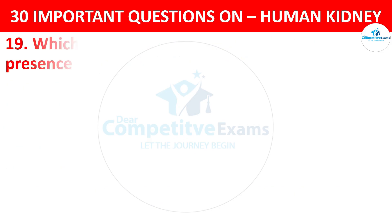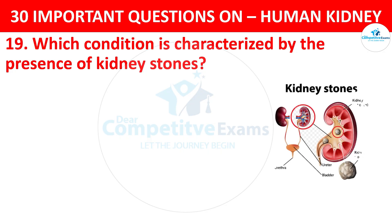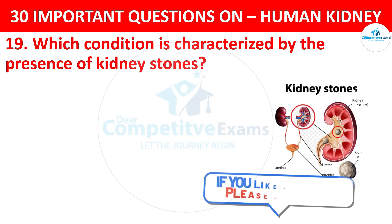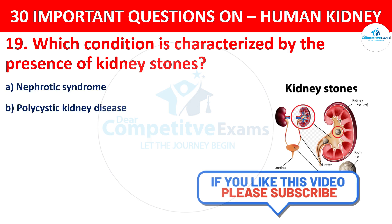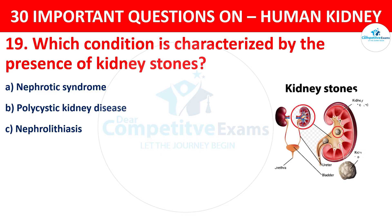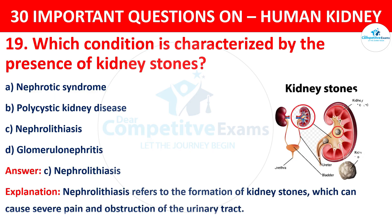Question 19. Which condition is characterized by the presence of kidney stones? The options are: Nephrotic Syndrome, Polycystic Kidney Disease, Nephrolithiasis, or Glomerulonephritis. The correct answer is C, i.e. Nephrolithiasis. Nephrolithiasis refers to the formation of kidney stones, which can cause severe pain and obstruction of the urinary tract.